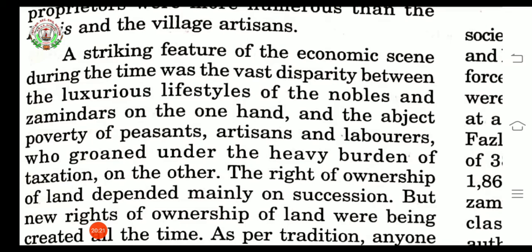When the zamindar collected the land revenue, they had the right to keep up to 25% of the revenue as their share, but they were not the owner of the land. The peasants who actually cultivated the land could not be dispossessed unless they stopped paying the rent or revenue. Both the zamindars and the peasants had their own hereditary rights in land. The zamindars were rajas who dominated large chunks — meaning parts — of territories and enjoyed internal autonomy, meaning the right of self-governance.